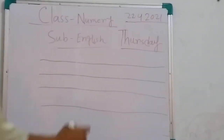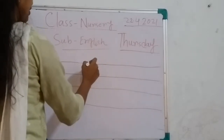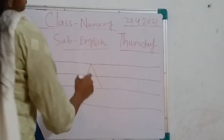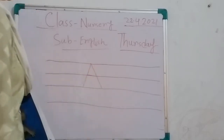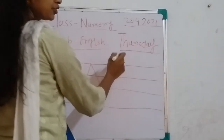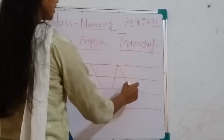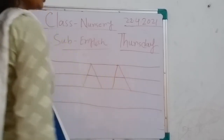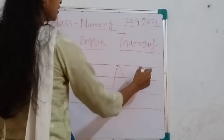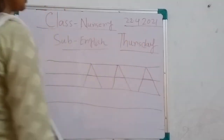First, go to the top and draw a slanting line. Then again go to the top and draw another slanting line. Then go to the middle and draw one slanting line. Do you understand? Go to the top and draw one slanting line, then another slanting line, then go to the middle and draw one slanting line. This is A.